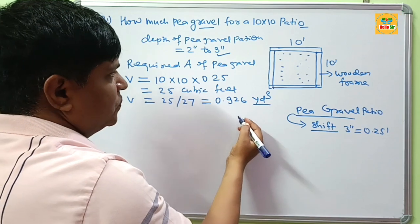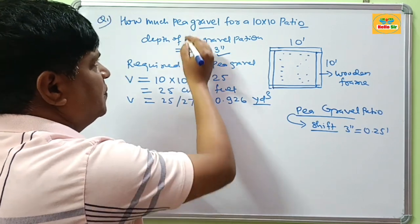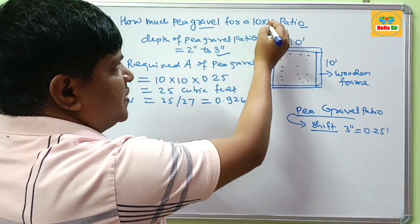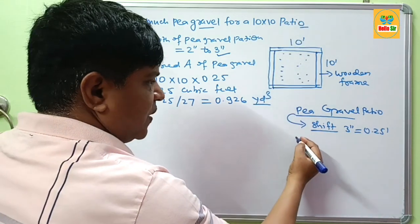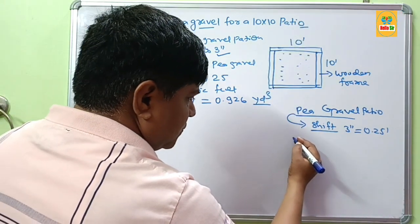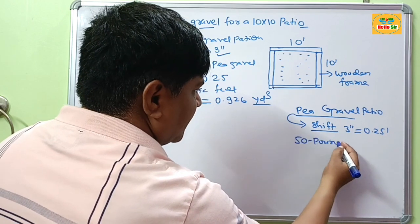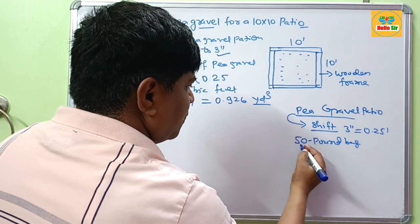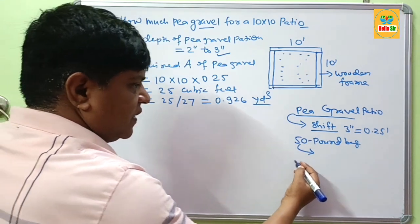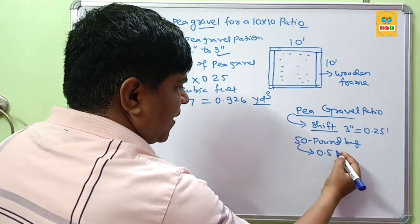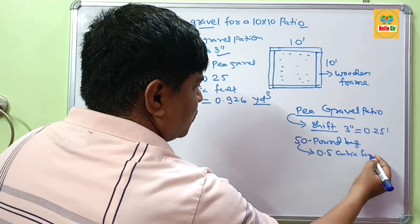And if you want to know how many 50 lb bags of big gravel do I need for 10x10 patio? Gravel can also be available in 50 lb bags, and one 50 lb bag of big gravel is about 0.5 cubic feet volume.